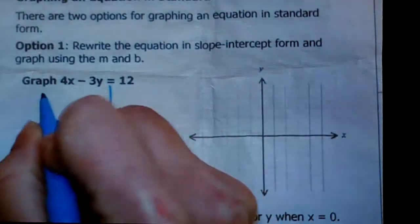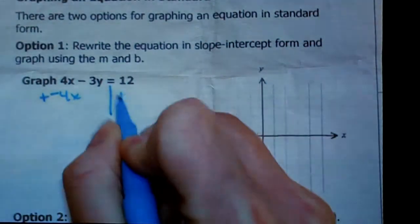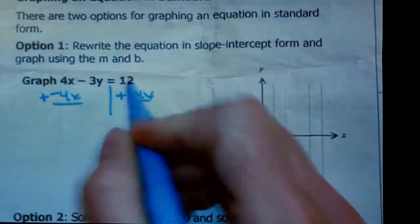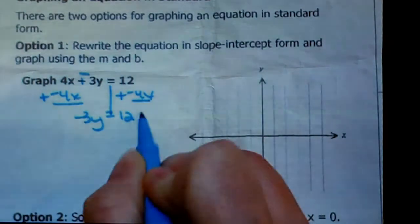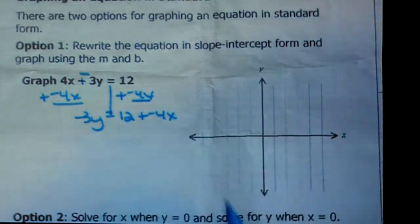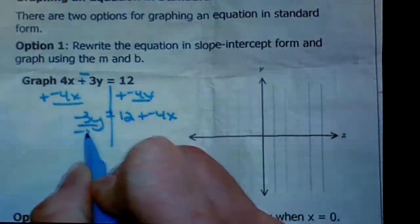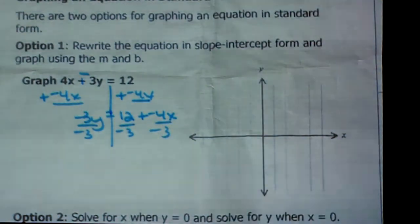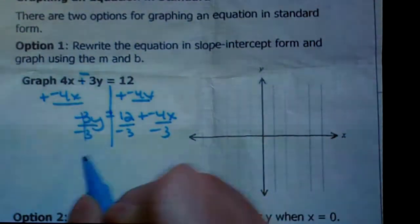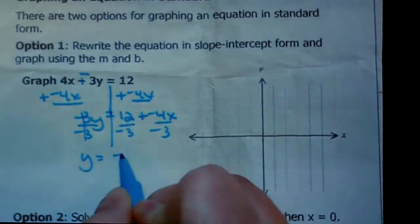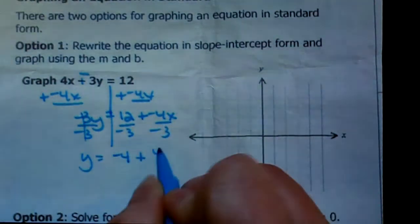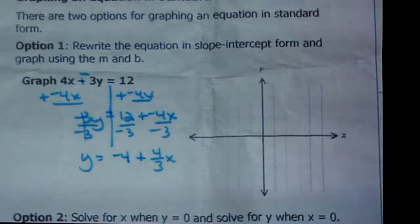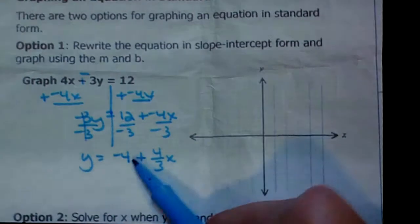Graph 4x minus 3y equals 12. I want to solve for y, so I would add negative 4x to each side. That would be my step 1. I'd be left with negative 3y equals 12 plus negative 4x. Then, of course, I would divide by negative 3. Make sure you divide each term by negative 3. And y would equal negative 4, and it is a negative 4 over a negative 3, so that would be plus 4 thirds x. And again, I want my slope to be a fraction because it's easier to graph.